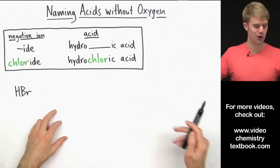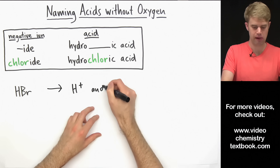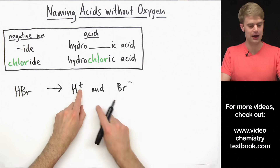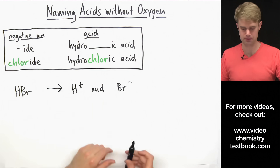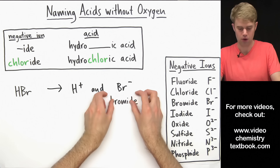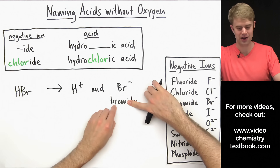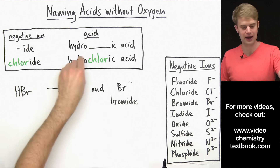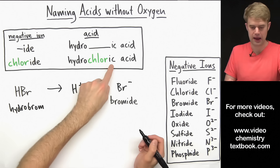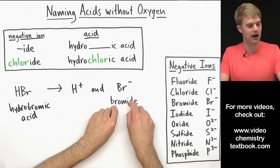Let's do another: HBr. We break this up into H+ and Br-, which is 1- because it has to cancel out the 1+ charge from H+. The negative ion is Br-, which we call bromide. To name this acid, we take off the -ide, take the stem B-R-O-M, and stick it between 'hydro' and 'ic,' giving us hydrobromic acid. That's how we name acids without oxygen where the negative ion ends in -ide.